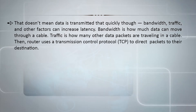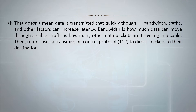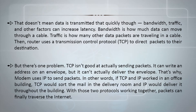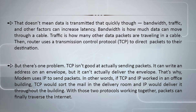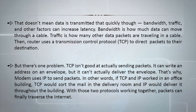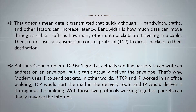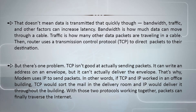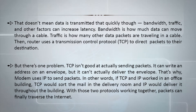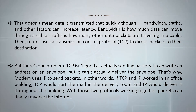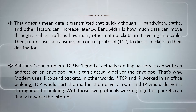A router uses the Transmission Control Protocol to direct packets to their destination. However, TCP is not good at actually sending packets — it can write an address on an envelope, but it cannot deliver the envelope. That is why the modem uses IP, the Internet Protocol, to send packets. In other words, if TCP and IP worked in an office building, TCP would sort the mail in the delivery room and IP would deliver it throughout the building. With these two protocols working together, packets can finally traverse the internet.